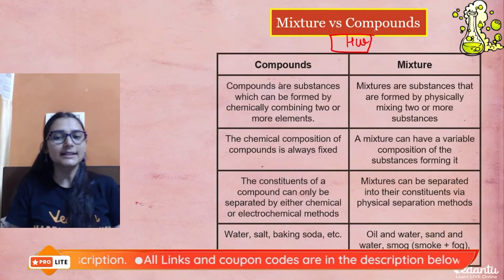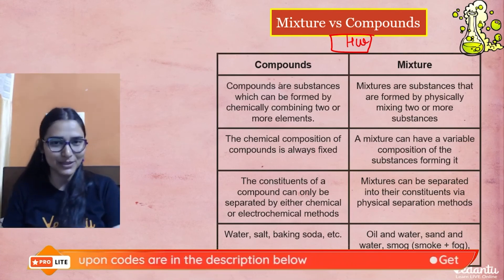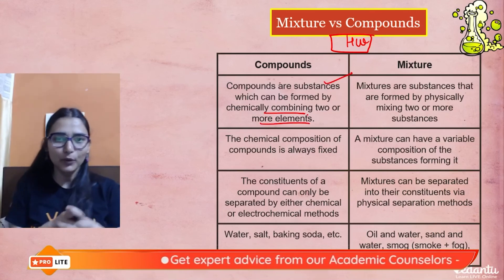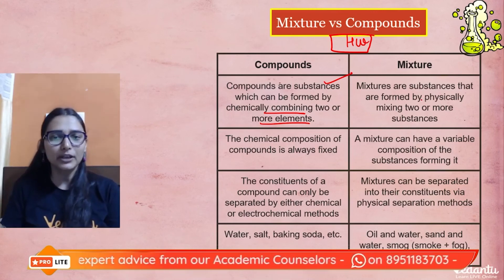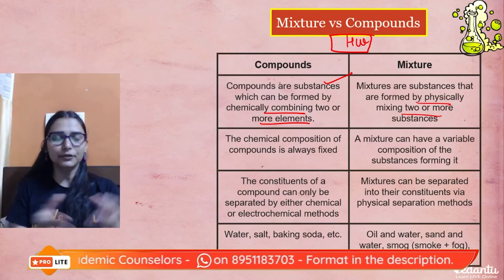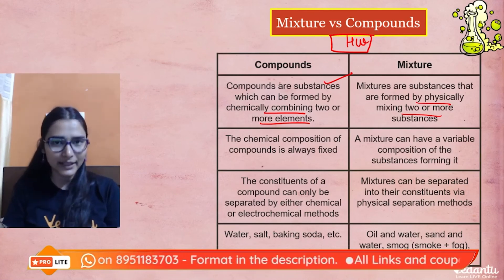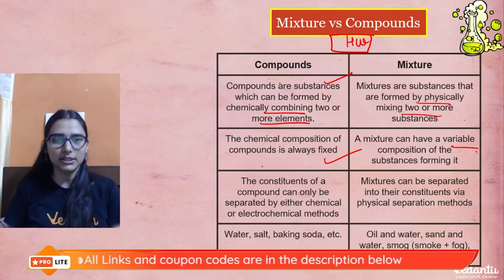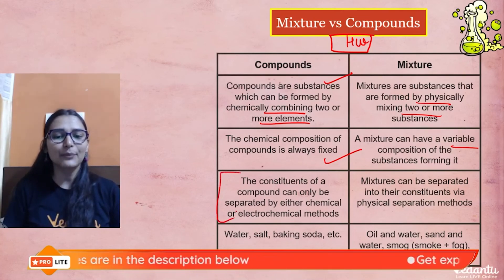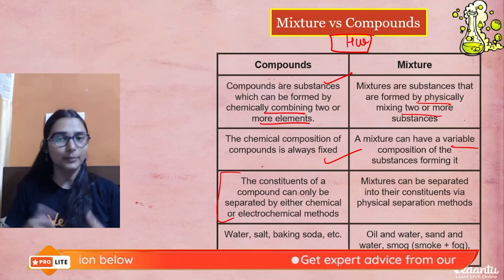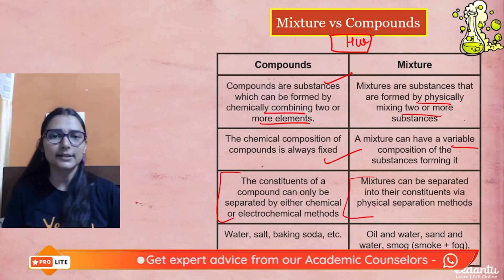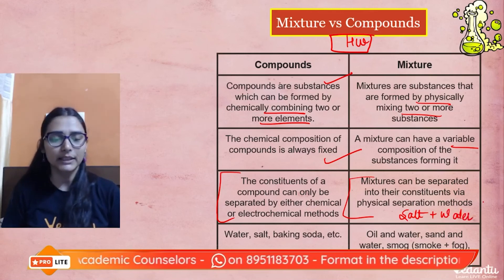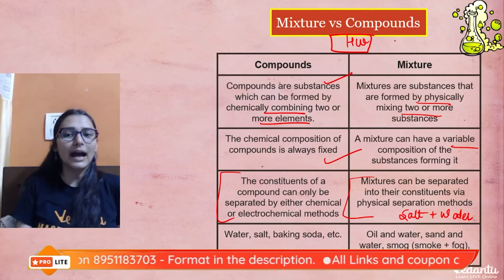To summarize: compounds are formed by chemical combination of two or more elements in a fixed mass ratio, while in mixtures it's a physical combination of pure substances in any random ratio. The composition of compounds is always fixed, but mixtures have variable composition. Compounds can only be separated by chemical methods, whereas mixtures can be separated by physical methods — for example, evaporation to separate salt from water.